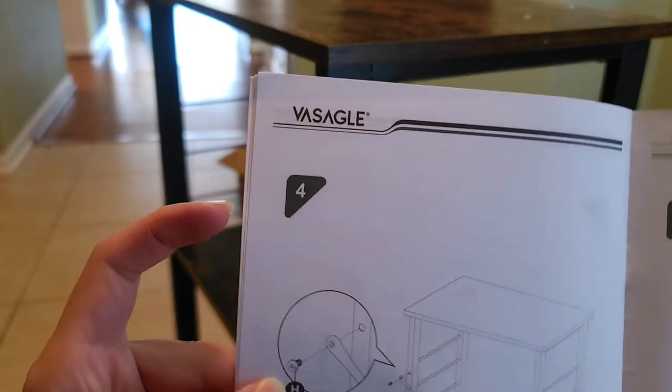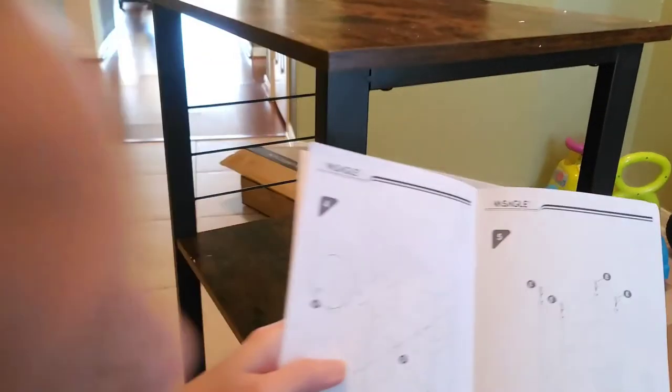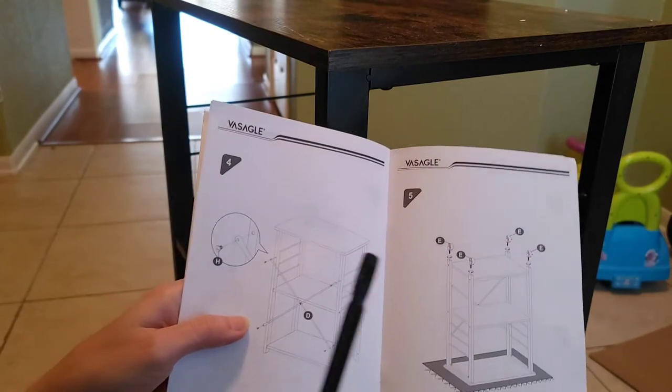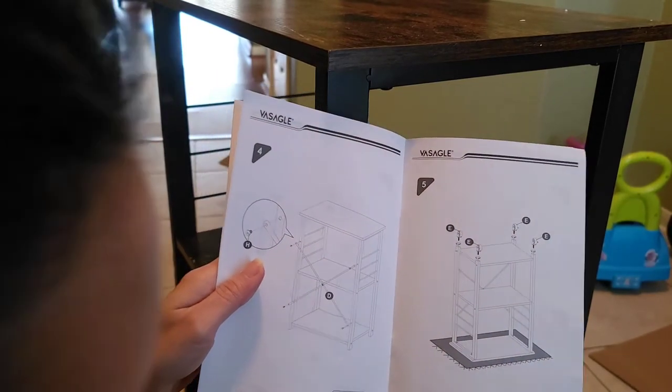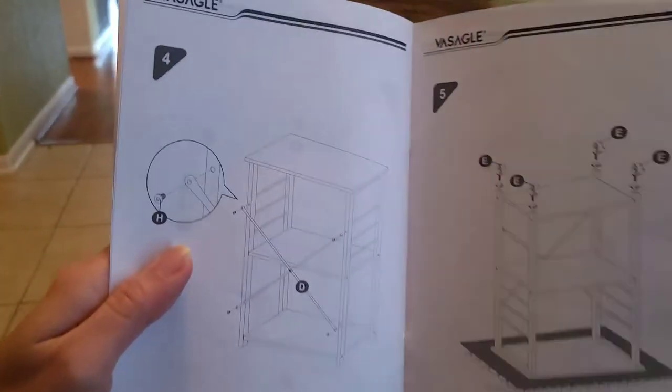Next we are going to install the metal piece D in the back using the H screw. It's short like this.